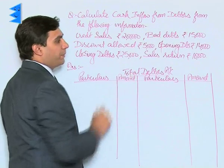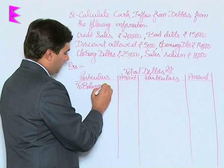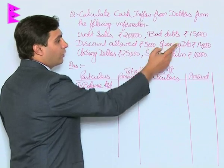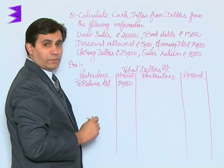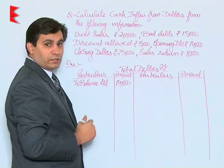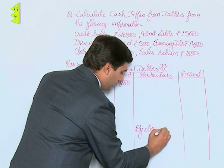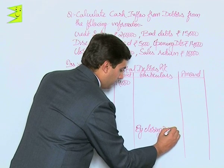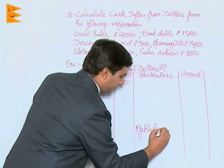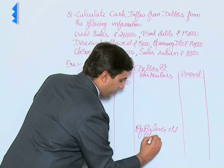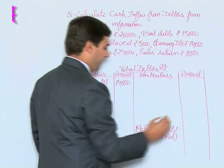Opening debtors are 14,000, so we enter: to balance brought down — opening balance 14,000 on the debit side. Closing debtors are rupees 25,000, so we write: by balance carried down — closing balance 25,000 on the credit side.